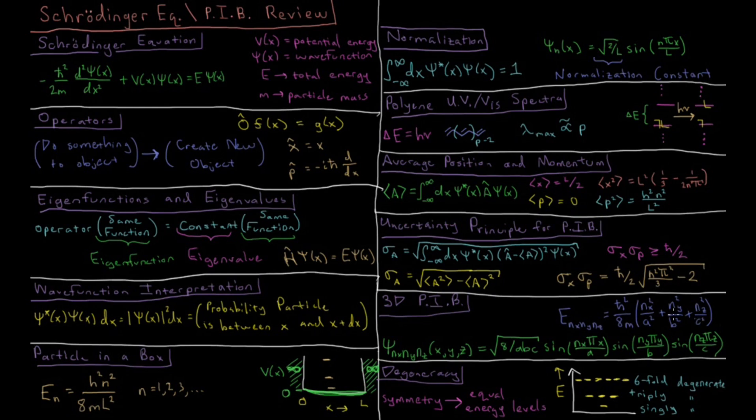This is called degeneracy when you have multiple energy levels at the same energy. So something which is the only quantum state at that energy level would be said to be singly degenerate. If there were three states, that would be triply degenerate, and six states would be called six-fold degenerate, et cetera. So for the 3D particle in a box, there are many ways to achieve degenerate energy levels if the length is the same in all three dimensions.